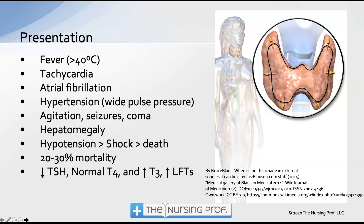When a patient has hyperthyroidism and develops thyroid storm, you will see all of those storm-type presentation symptoms. Watch carefully for when blood pressure starts to drop, as the patient may then develop shock and die. There is a 20 to 30% mortality rate, likely because many cases happen at home and patients arrive at the hospital too late for appropriate treatment. In the hospital, we can watch for thyroid storm by monitoring vital signs — fever and tachycardia will be noticed fairly quickly.